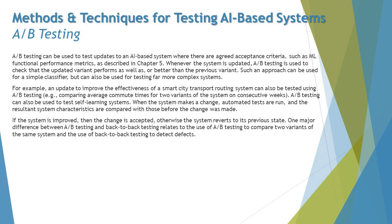A/B testing can also be used to test self-learning systems. When the system makes a change, automated tests are run and the resultant system characteristics are compared with those before the change was made. This method adds value by helping reach a conclusion about what is best recommended at any point in time.